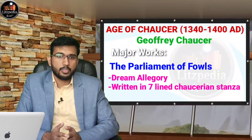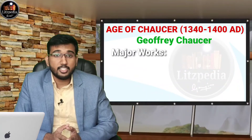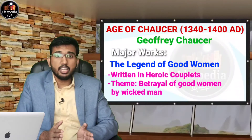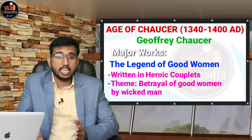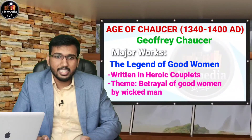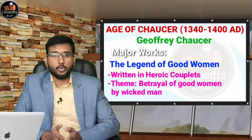The next work by Geoffrey Chaucer is the Legend of Good Women, written in decasyllabic couplets — that is, heroic couplets. The theme is the betrayal of good women by wicked men. We should note that this is a palinode, a poem retracting an earlier argument made by the poet, because in Troilus and Criseyde, Chaucer had negatively portrayed women. So, to balance that, he wrote the Legend of Good Women to give a better image of womanhood.